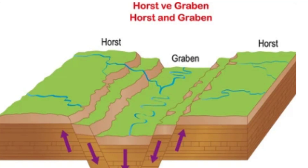Grabens, on the other hand, are sunken blocks of land that form in response to tectonic forces. When two parallel faults move towards each other, the block of land in the middle drops down, creating a trough or basin. This can result in a valley or canyon, with steep cliffs or escarpments on either side. Like Horsts, Grabens can vary in size, from narrow channels to broad basins that cover hundreds of square kilometers.